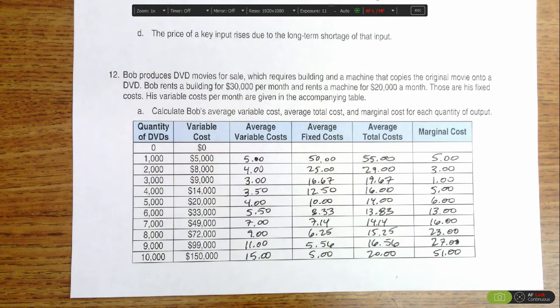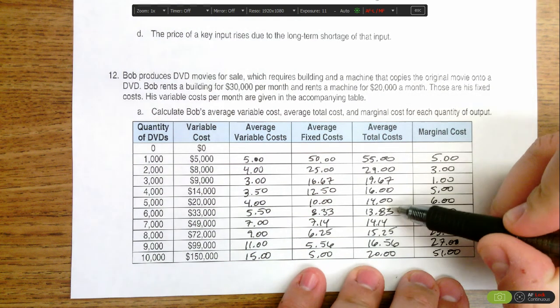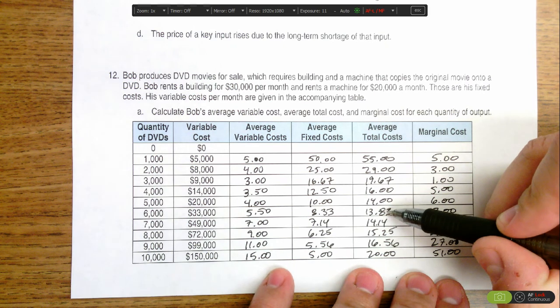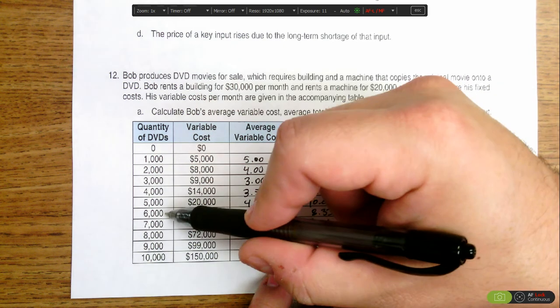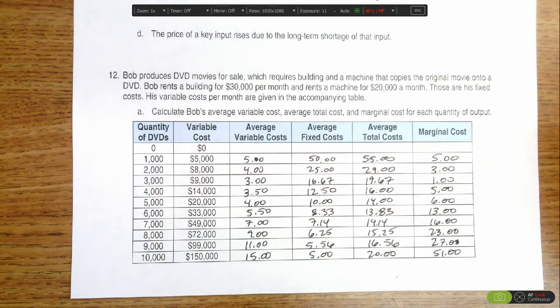And the place at which economic profit would be zero, or at its minimum, is at the minimum point of the average total cost curve. So we could look and see where the minimum of average total cost is—that's $13.83. So in the long run Bob will produce 6,000 DVDs at a price of $13.83.